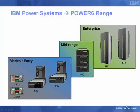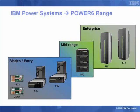Let's have a quick look at the current Power 6 range. At the low end we have the blades, the JS12 and 22. They fit into the IBM Blade Center — we can have 14 of these in a particular Blade Center. Then we have the entry machines, which are either desk side or can go into a 19 inch rack: the 520 and the 550. They can also have extra I/O drawers to provide extra adapters. In the mid-range we have the 570 machine, again with extra I/O drawers. And at the enterprise level we have the 24 inch rack machines, the 595 and the 575.